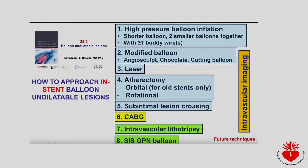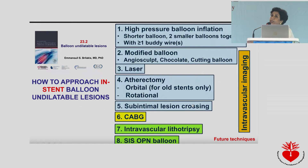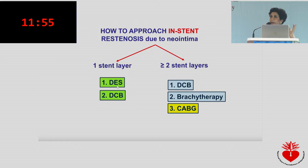For lesion preparation, we can use high-pressure non-compliant balloons and short balloons going up to very high pressures. Sometimes two balloons together or an OPN balloon can be effective. We can also use special balloons like scoring balloons, AngioSculpt, or cutting balloons. For severely calcified vessels, we may need debulking devices like rotational atherectomy. In certain situations, intravascular lithotripsy can be used. Intravascular imaging is invaluable in deciding which modality to use.